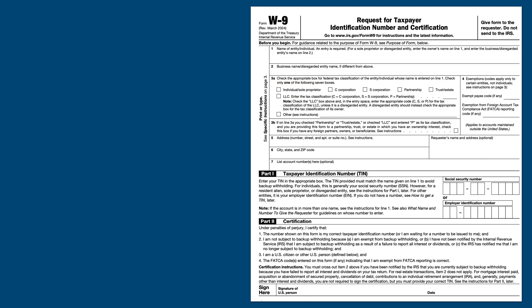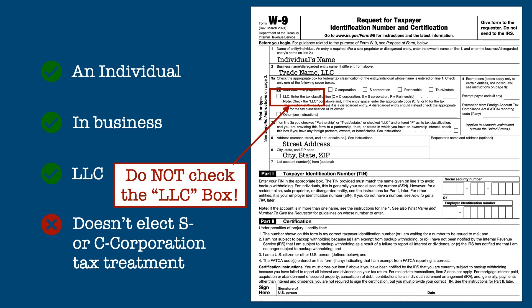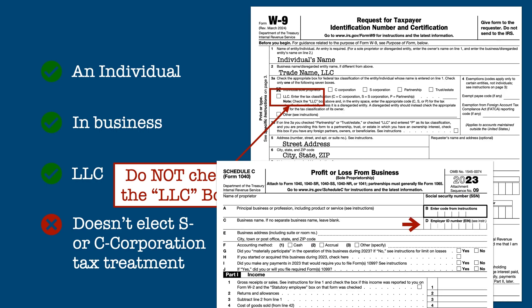For an individual in business who also has an LLC, but has not elected to be treated as a corporation for tax purposes, the name of the individual is entered on line 1, the name of the LLC is entered on line 2, and the individual/sole proprietor box is checked. Do not check the LLC box because in this situation the LLC is disregarded when filing a tax return. Individuals in this situation can provide either their Social Security Numbers or the LLC's Employer Identification Number. If entering an EIN, the EIN must show up on the individual's Schedule C.